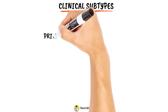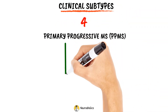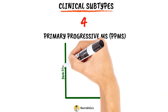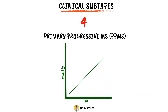Primary-progressive MS is characterized by progressive accumulation of disability from disease onset with occasional plateaus, temporary minor improvements, or acute relapses still consistent with the definition. Primary-progressive MS represents about 10% of adult MS cases at disease onset.